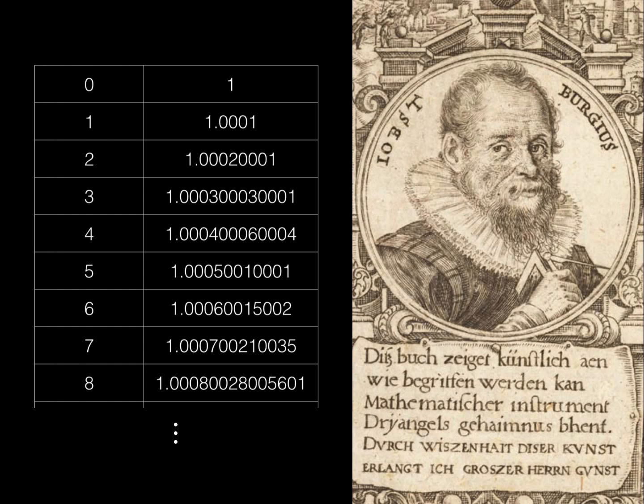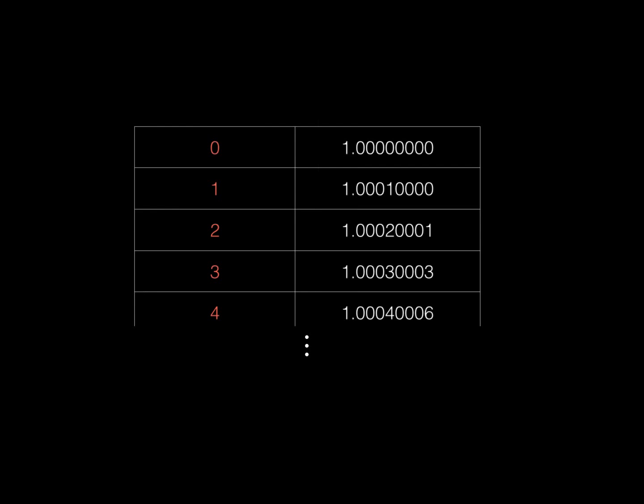the numbers on the right are much closer together, so that even if a number you want to multiply isn't exactly in the table, we can find one close by and still get an approximation. To keep it neat and consistent, Yost limited the numbers on the right to 9 digits. He colored the ones on the left red, and called them the red numbers. But that's not what we call them today.